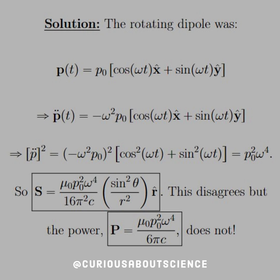Why does equation 5.9 give something different? It comes down to how we define the orientation. In 11.4, equation 5.9 references the polar axis, which is in the direction of P double-dot. But if we're rotating, the axes have to rotate too, and that's not accounted for here. Be aware that the orientation of the vector matters — you need magnitude and direction. For the power, though, this does agree because we've integrated over all angles, so the orientation of the polar axis is irrelevant. Little subtleties like that will catch up to you, especially in research papers.